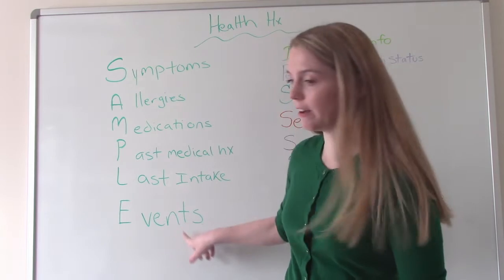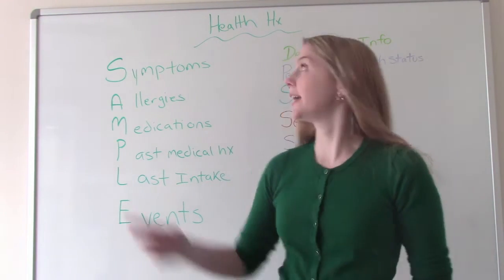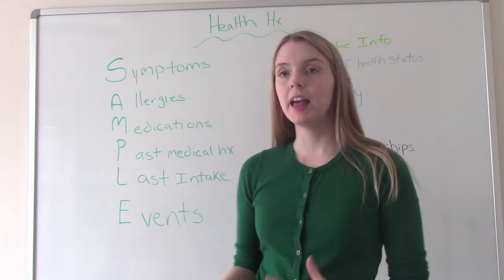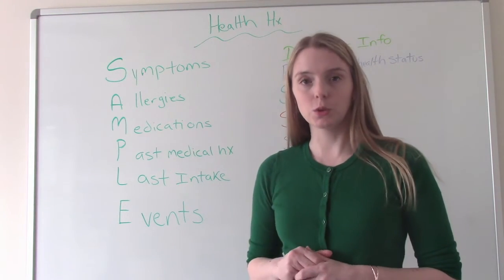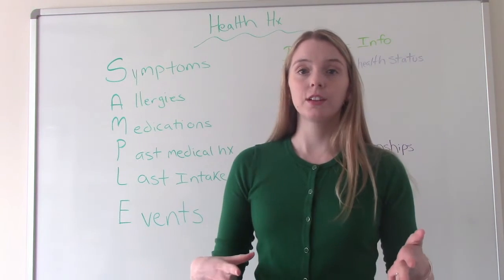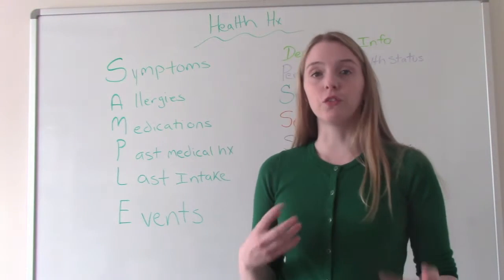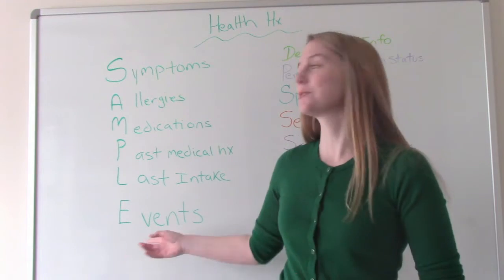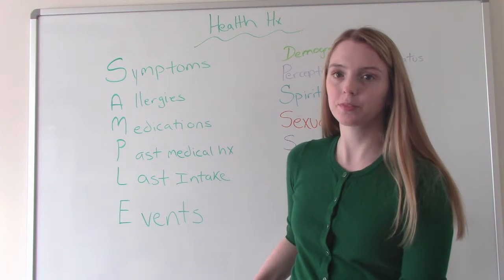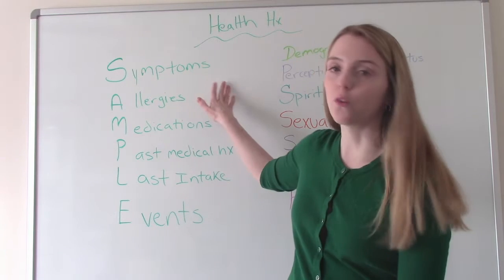And then E is for events. So if they're coming in with their chief complaint, telling you about their symptoms, or maybe they've had an accident or some sort of random injury — the events refer to what led up to this. What were the events that led up to you coming here today? Maybe they say, I've had a cough but I've had it for a month — that's relevant. Or I had a fall because I was doing something dangerous. So that's SAMPLE for health history.